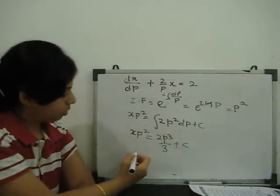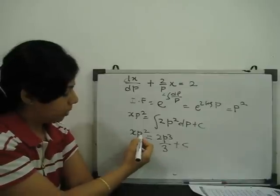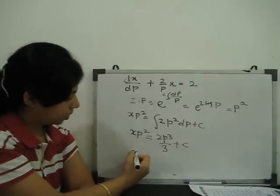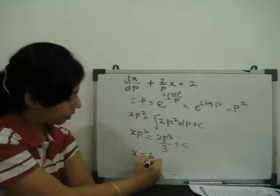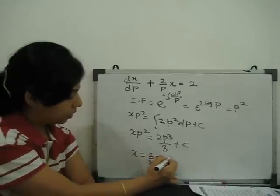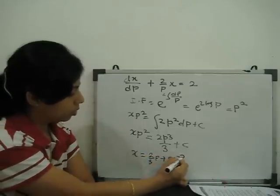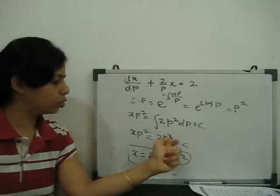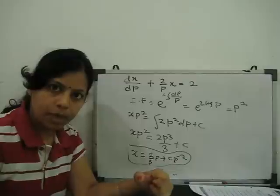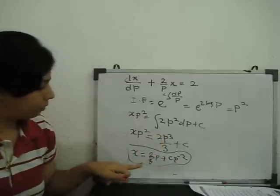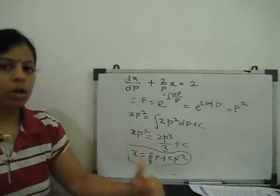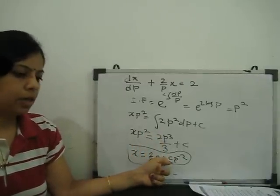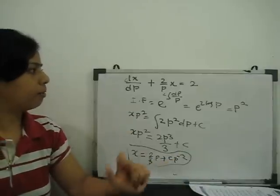So, what is x? x is equal to 2 by 3p plus c p to the power minus 2. Here we see that we can't able to simplify it for p but we can find out the value of x. Value of x is 2 by 3p plus c p to the power minus 2.